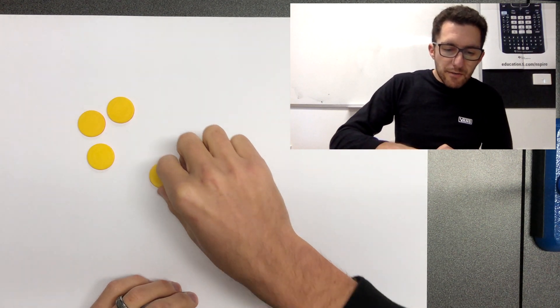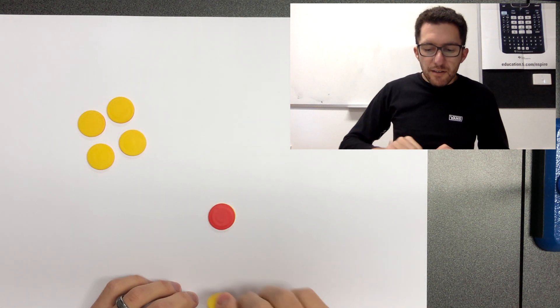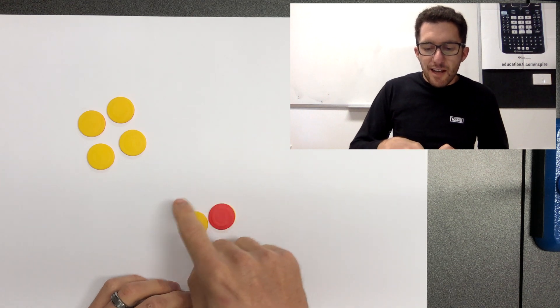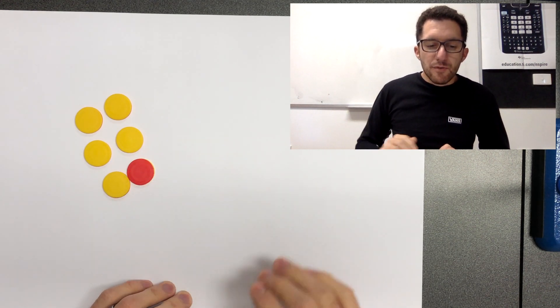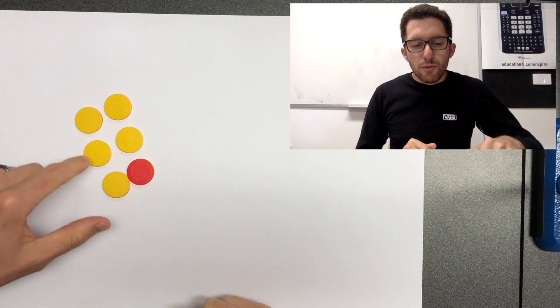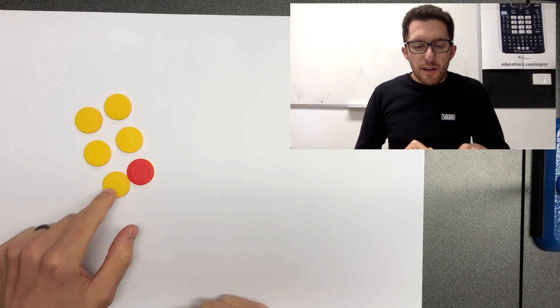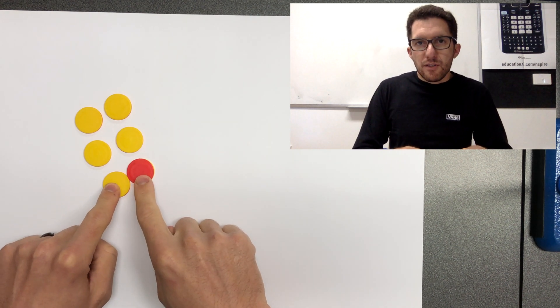They are both equal to nothing essentially when they're together. So if we have our number four, then I could potentially add this zero pair onto our number four and it would still be worth four, wouldn't it? Because we have one, two, three, four yellow ones.